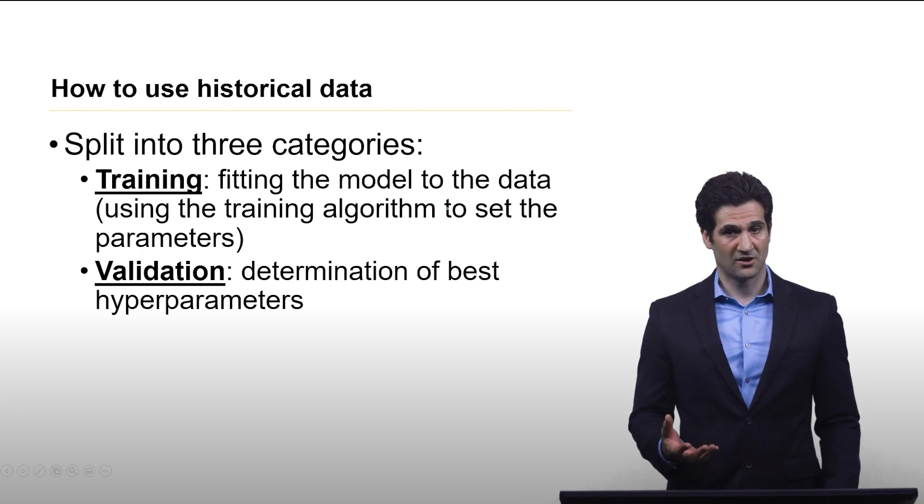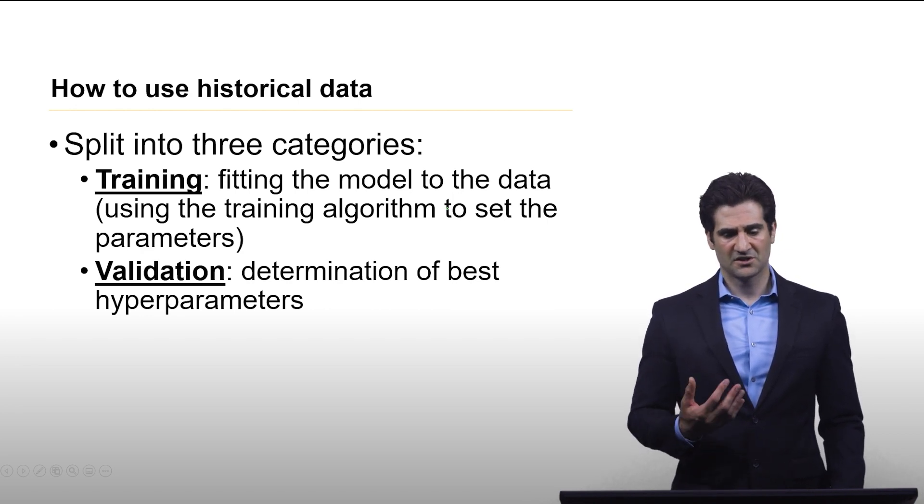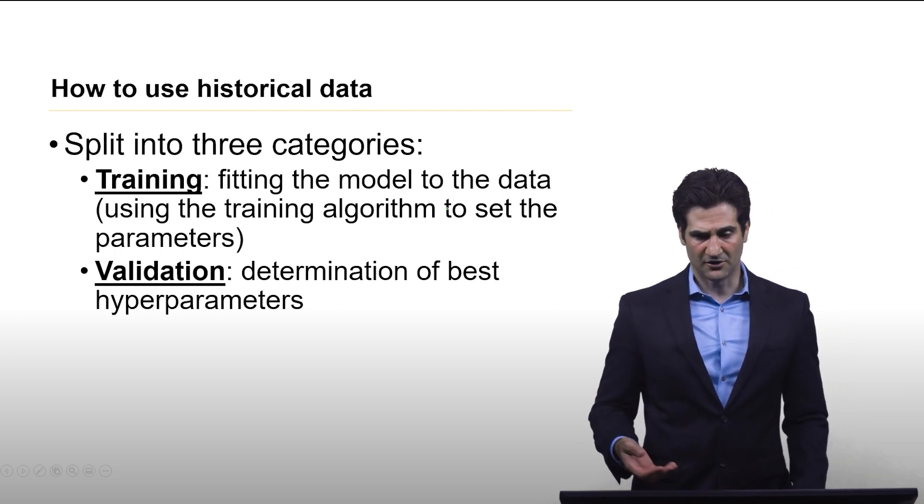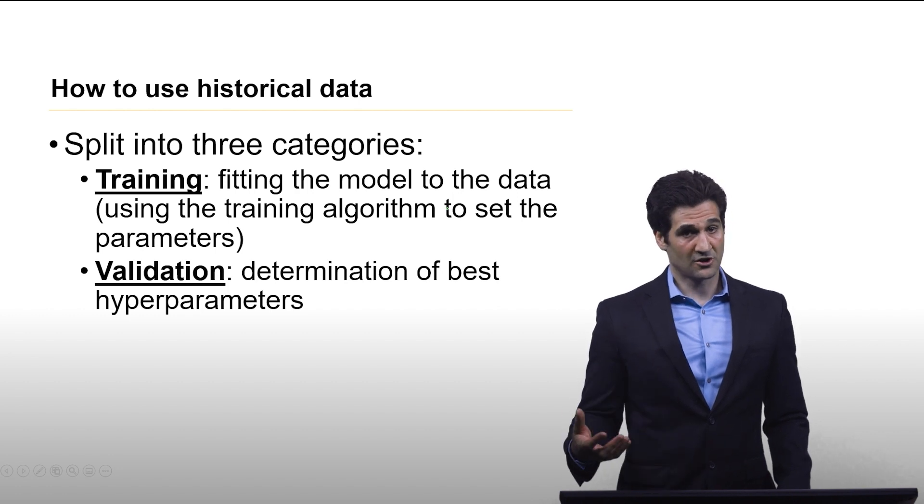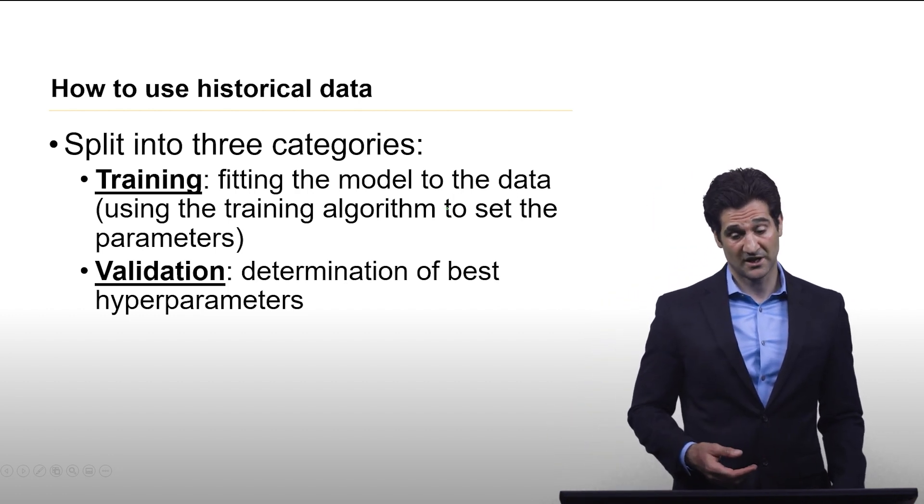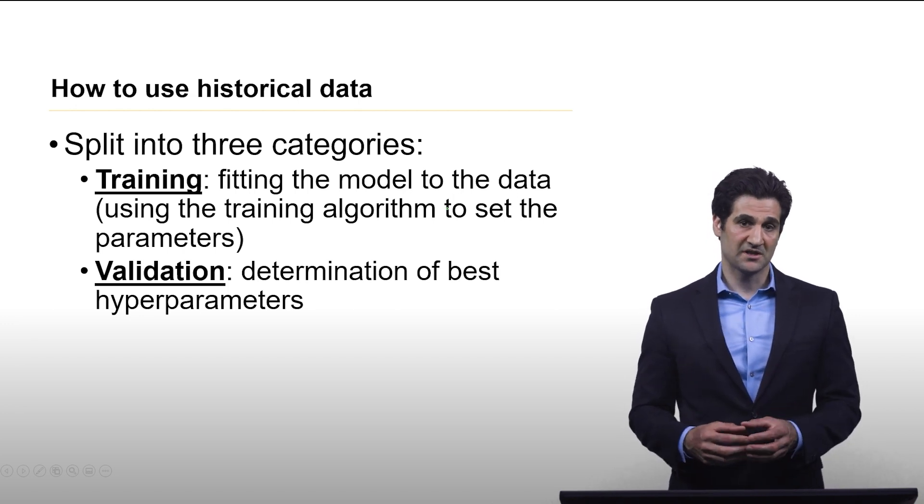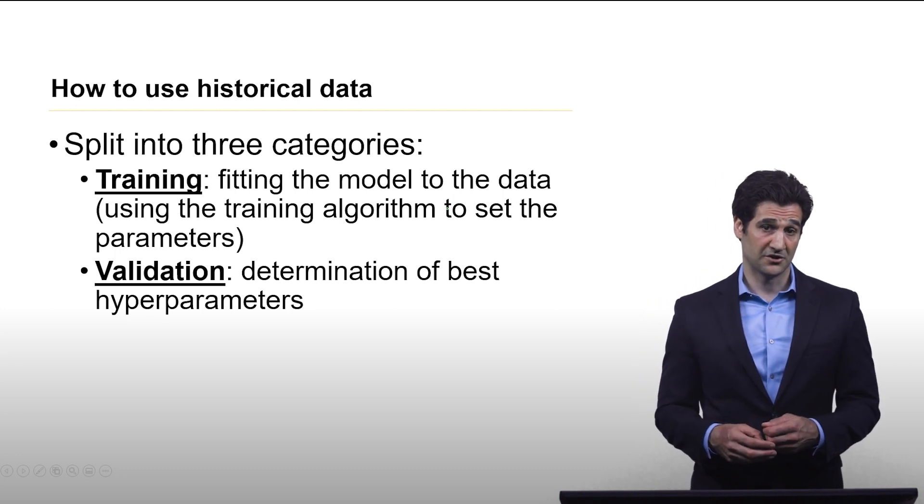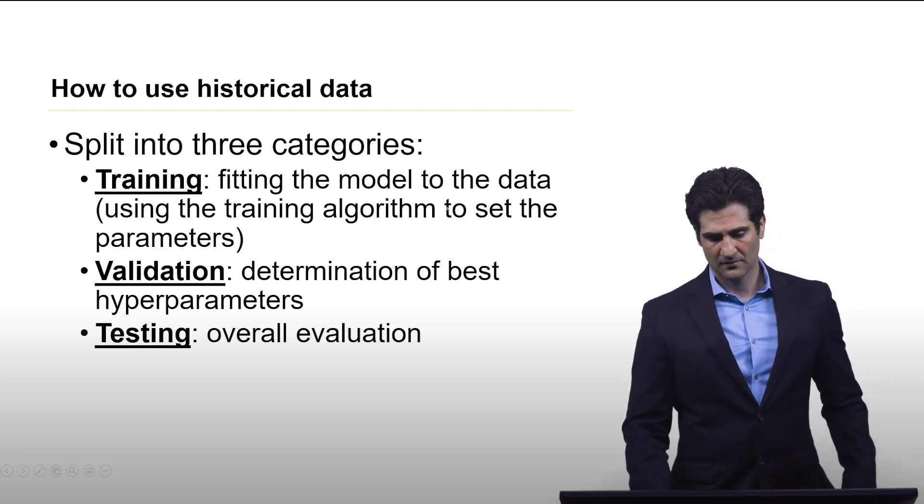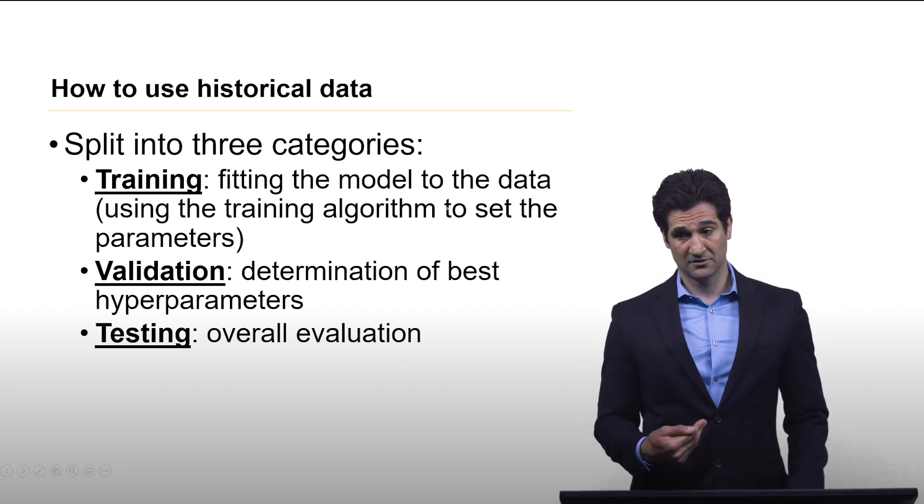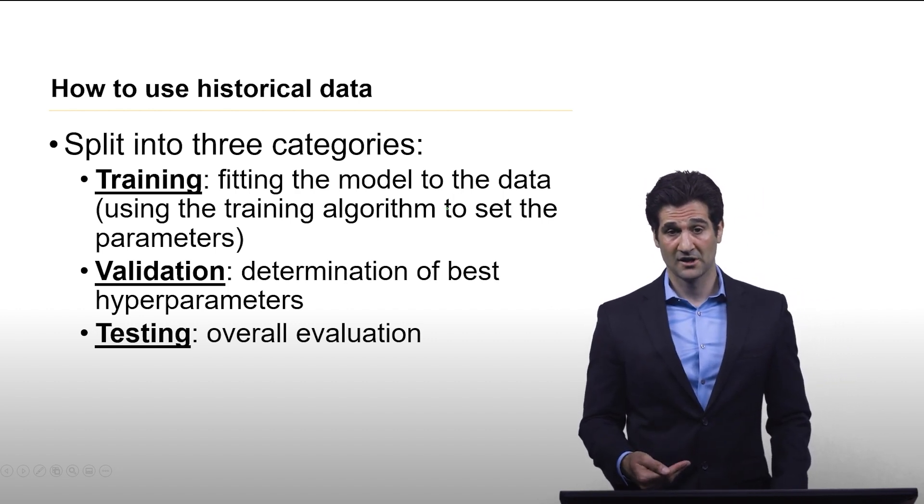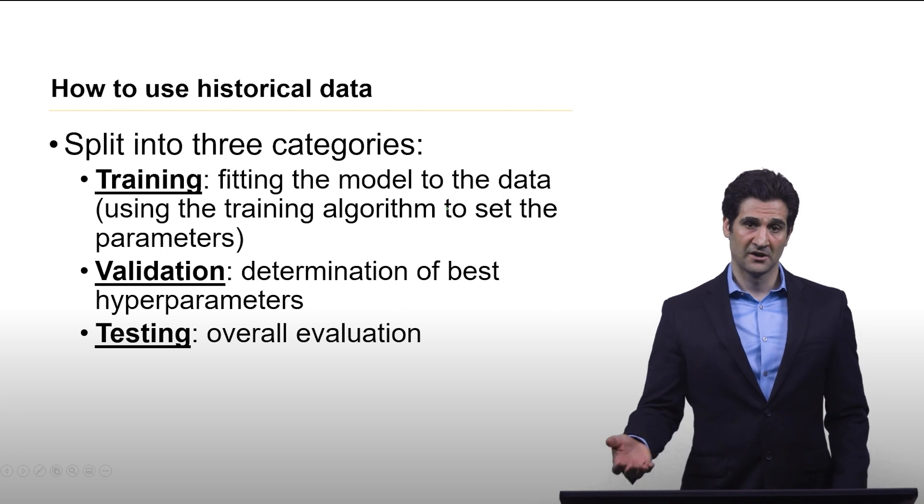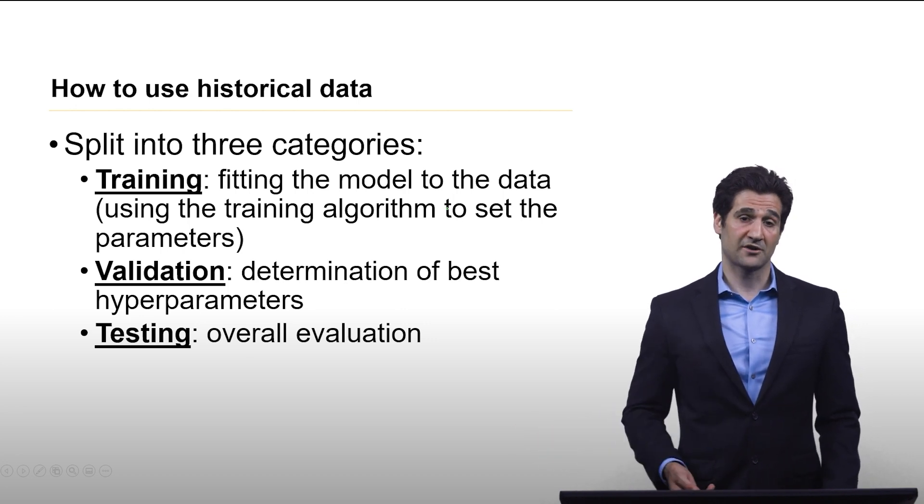The next group of data is called validation data. This is to be used by the designer of the machine learning method to determine the best hyperparameters for your specific use case. You want to have this be separate from the training data, but still coming from roughly the same distribution. Finally, is testing. Once I have the model, and I'm comfortable with what the hyperparameters are, I then want to test the model to understand its performance. That's the last step you want to do before actually deploying the model.